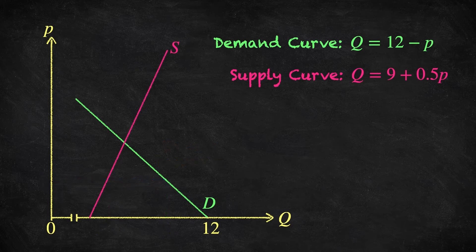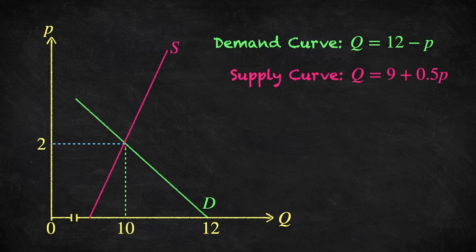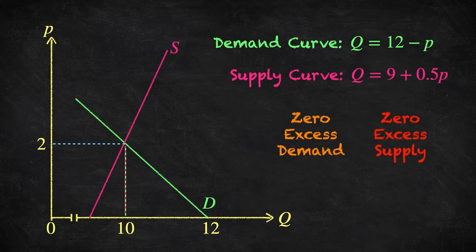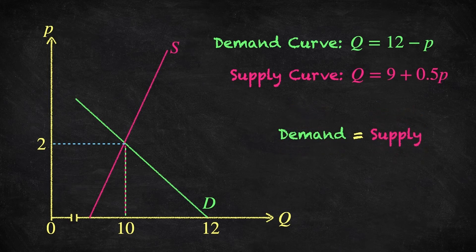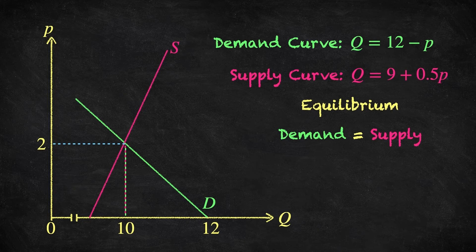Finally, let's have a look at an equilibrium. Suppose that the market price of coffee is $2 per pound. In this case demand is 10 and supply is 10: zero excess demand, zero excess supply, demand equals supply. This is what we call an equilibrium — we'll say that $2 is the equilibrium price. And this reminds us that it's price that's doing the heavy lifting here, making this magic situation of an equilibrium happen.